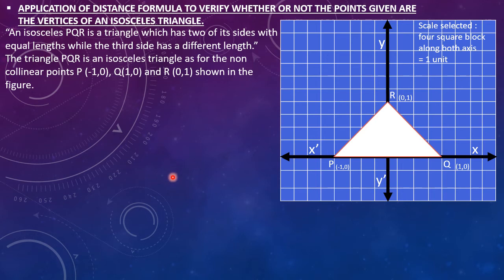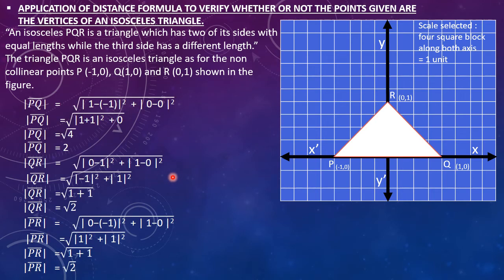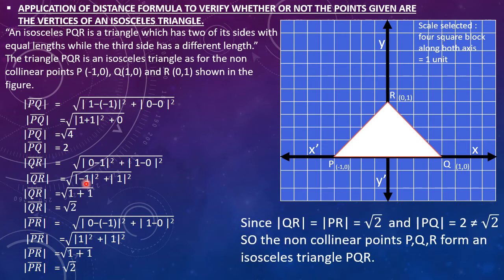The scale selected is 4 square blocks along both axes equal to 1 unit. We apply the distance formula to find the distances PQ, QR and PR. The distance PQ is found as 2. Similarly, the distance QR is found as √2, and the distance PR is also √2. As you can see, two of the sides are the same, so our condition is fulfilled. Therefore, the sides QR and PR are both √2 while the side PQ is different. So the non-collinear points P, Q and R form an isosceles triangle PQR as two of the sides are equal.